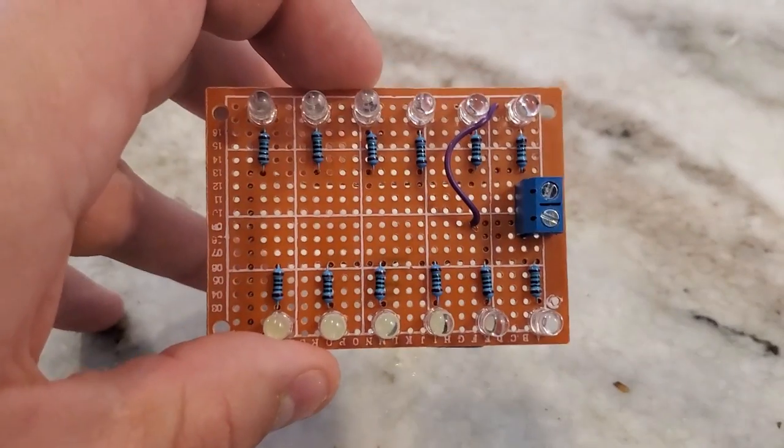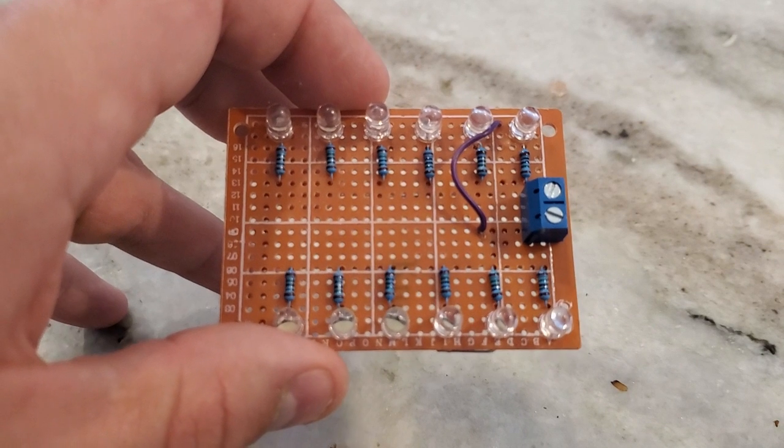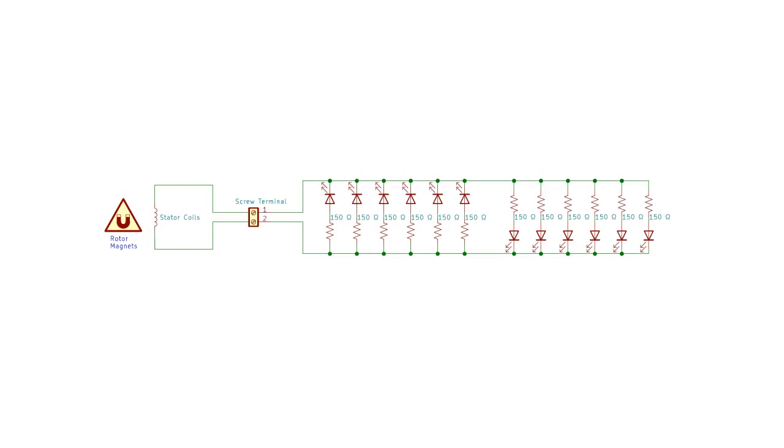Next I made an LED board to hook up to the water wheel's output. It has two sets of LEDs wired anti-parallel, so on one side of the alternating current output, one set gets lit up, and on the other side of the output, the opposite set lights up.